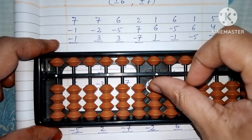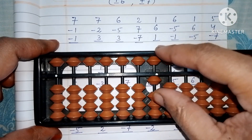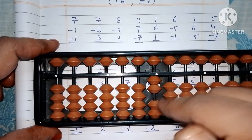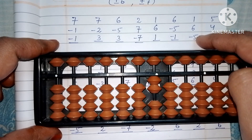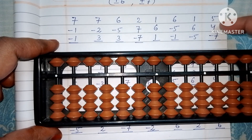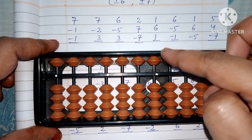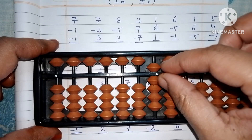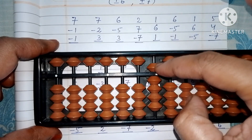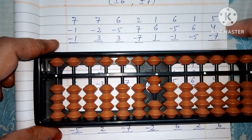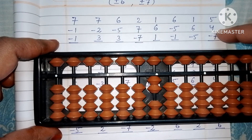Next question: 1 plus 6 minus 5. Add 1, add 6, subtract 5. The answer is 2. Set to 0. Next question: 5 plus 4 minus 7. Add 5 with your index finger, add 4 with your thumb finger, then subtract 7 by removing the upper bead and 2 lower beads. The answer is 2.